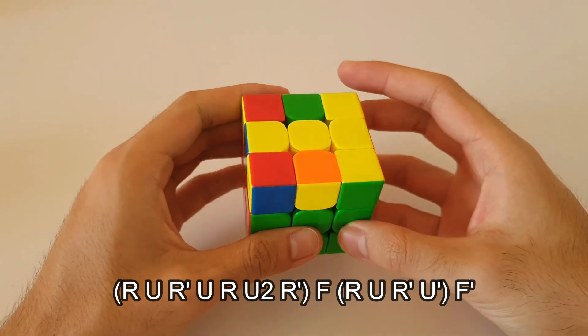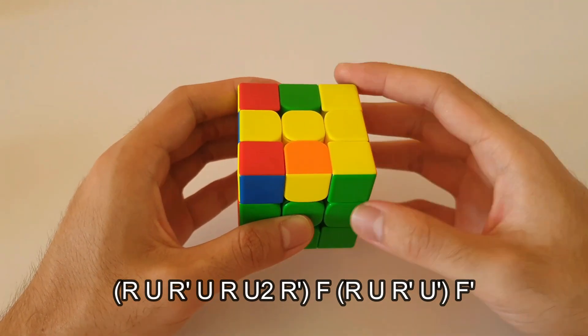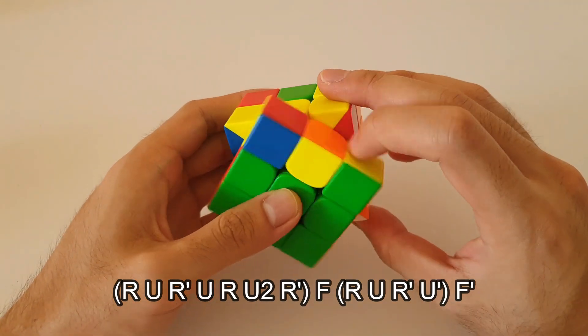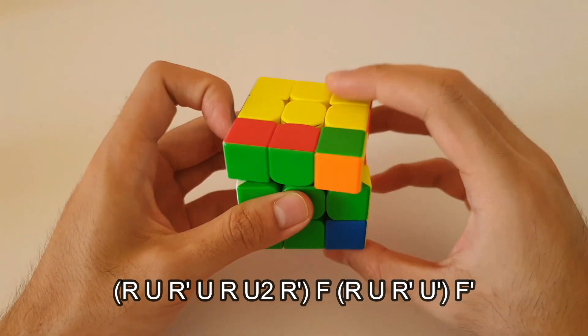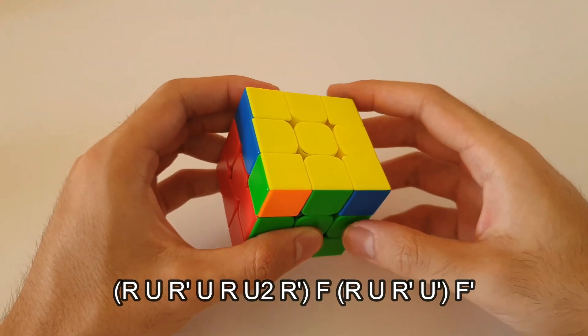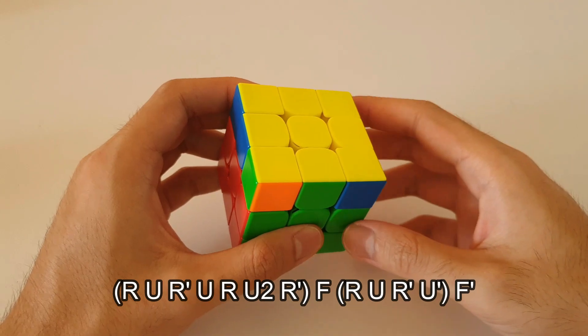And then after the sune, we have this T-OLL which by now you should also know how to do. And there you have it. That is the algorithm for that OLL case.